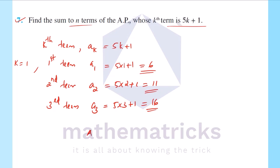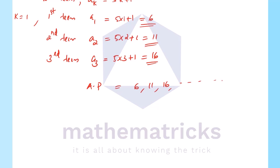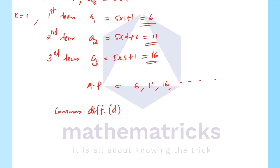So we have the AP: first term 6, second term 11, third term 16. Now we find the common difference. d equals second term minus first term, that is 11 minus 6, that is equal to 5.